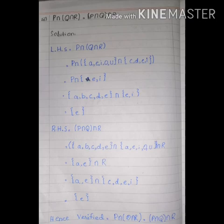Now we intersect P set with the result of Q intersection R, which is {E, I}. P set is A, B, C, D, E. The common element between P set and {E, I} is only E. So the left-hand side answer is E. Left-hand side is now solved.